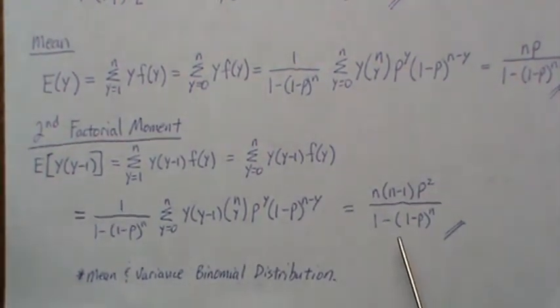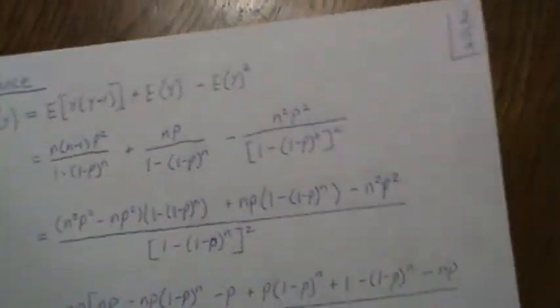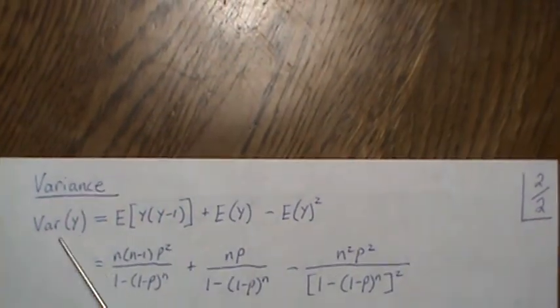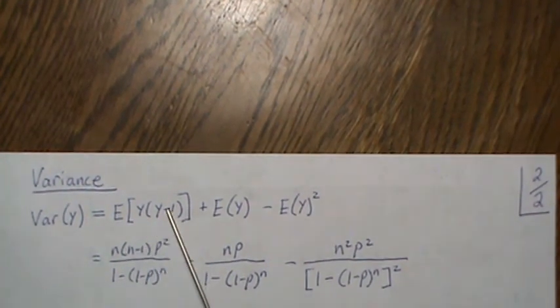I'm going to refer you back to a video I call the mean and variance of a binomial distribution, where we derive this np and this second factorial moment of a binomial. The variance would be this formula.